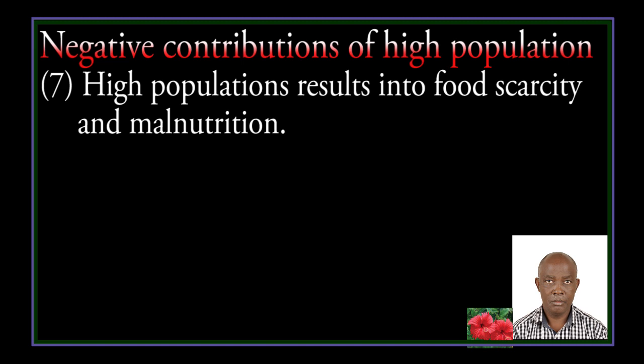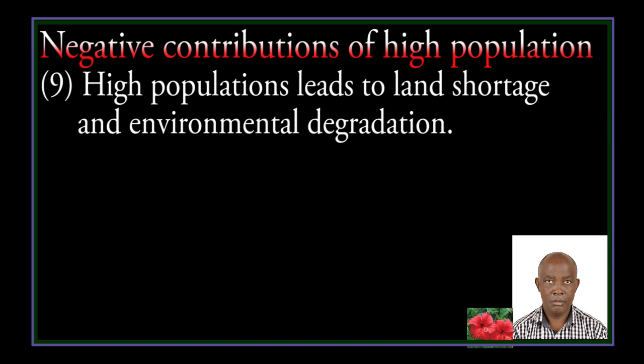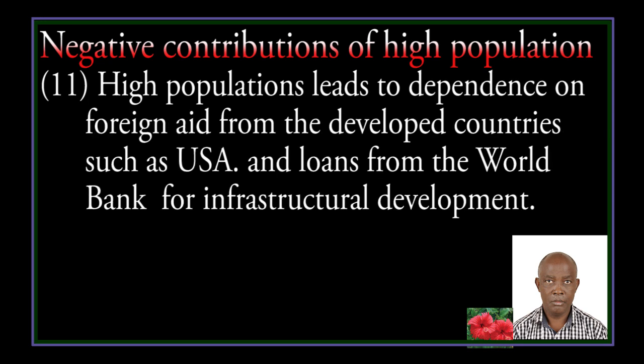High population leads to insecurity and unrest due to competition for limited resources. High population results in food scarcity and malnutrition. High population promotes spreading of diseases. High population leads to land shortage and environmental degradation. High population leads to increased government expenditure on social services and dependence on foreign aid from developed countries such as the USA and loans from the World Bank for infrastructure development.